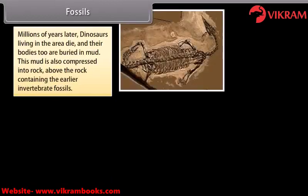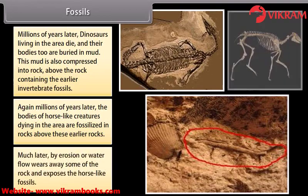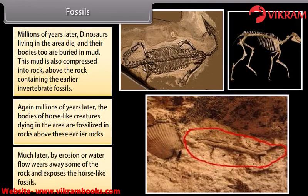Millions of years later, dinosaurs living in the area died and their bodies were buried in mud, compressed into rock above the earlier invertebrate fossils. Again, millions of years later, horse-like creatures were fossilized in rocks above these. Much later, erosion or water flow wore away some rock and exposed the horse-like fossils near the surface.